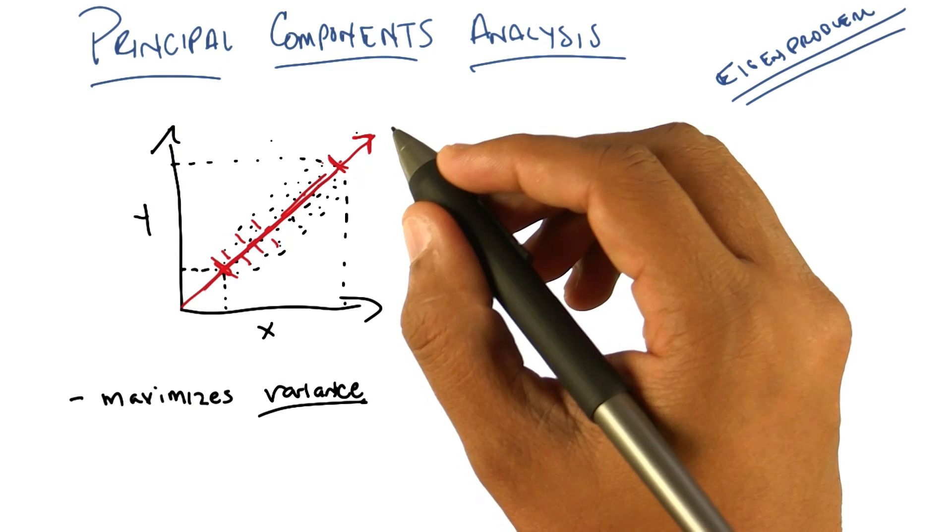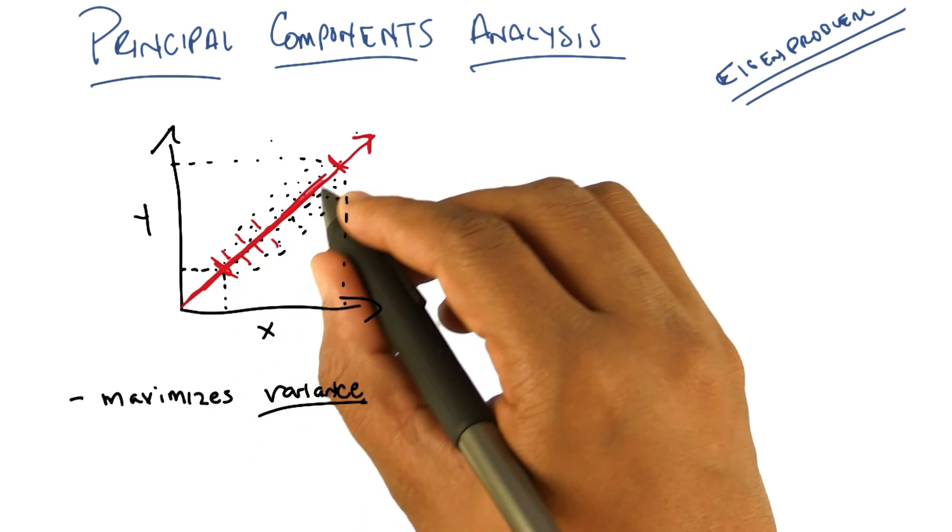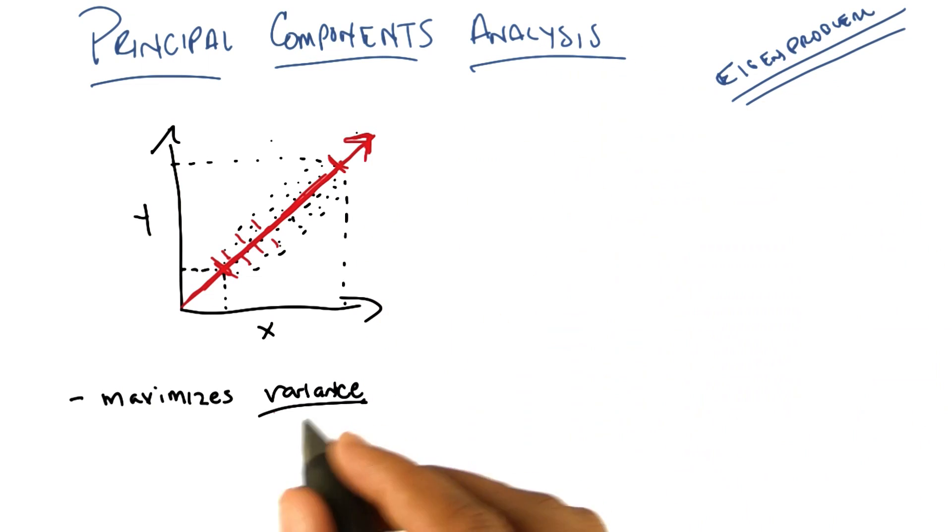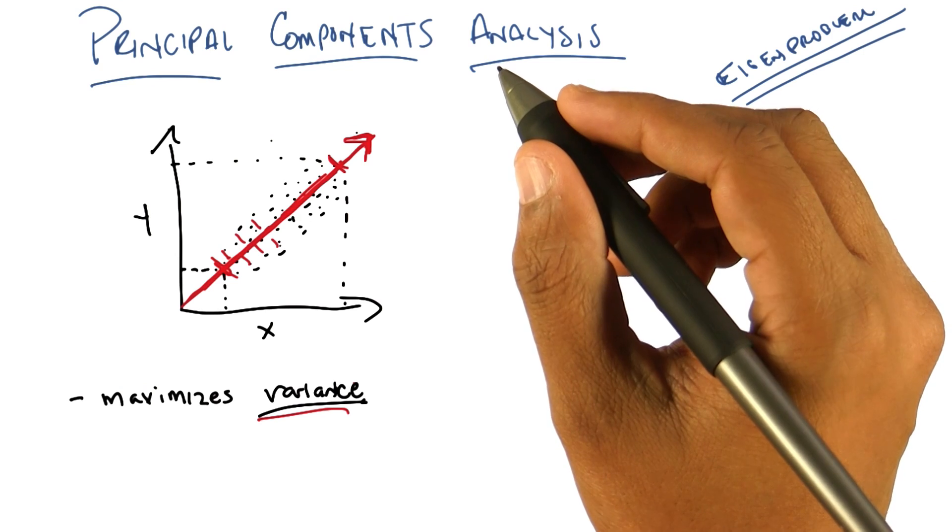So, principal components analysis, if it had to find a single dimension, would pick this dimension because it is the one that maximizes variance. Okay, you got it?